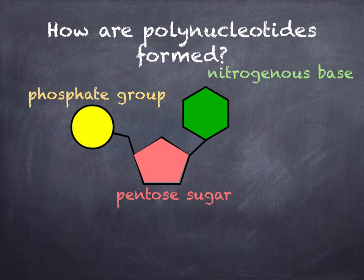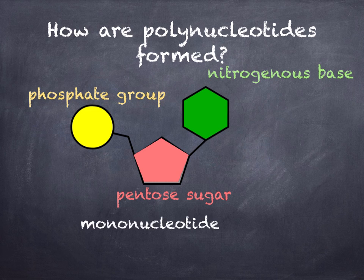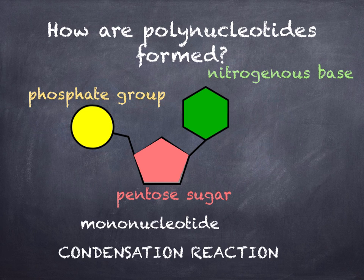How are polynucleotides formed? The phosphate group, pentose sugar, and nitrogenous base combine together by a condensation reaction to form a mononucleotide. A mononucleotide can then join with another mononucleotide to form a dinucleotide, and then a polynucleotide, by further condensation reactions.